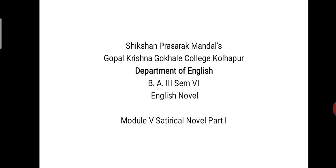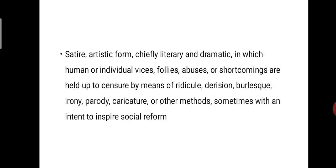Before learning the satirical novel, we are going to learn what is the meaning of satire and how there are different meanings to the particular term. Satire is an artistic form, chiefly literary and dramatic, in which human or individual vices, follies, abuses or shortcomings are held up to censure by means of ridicule, derision, irony, parody, caricature or other methods — sometimes with an intent to inspire social reform. Satire is an artistic form.